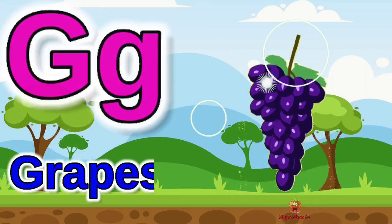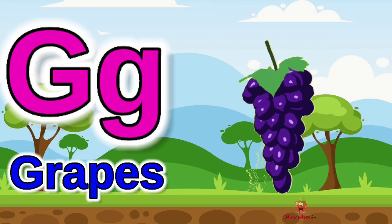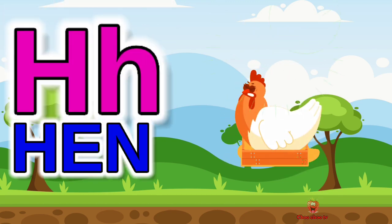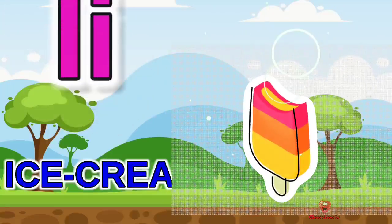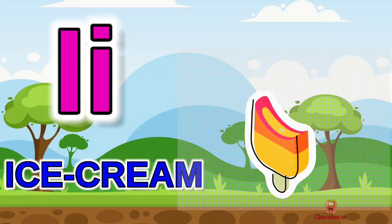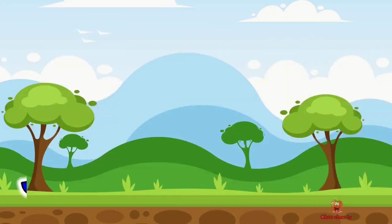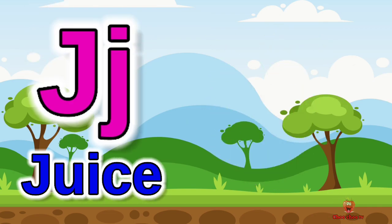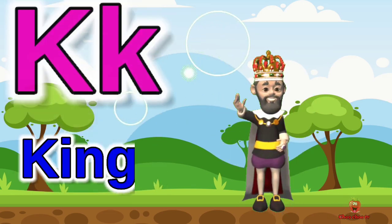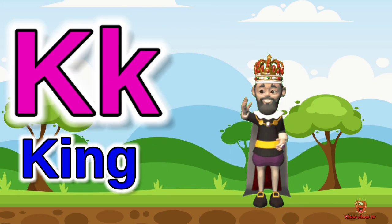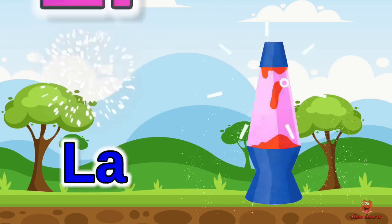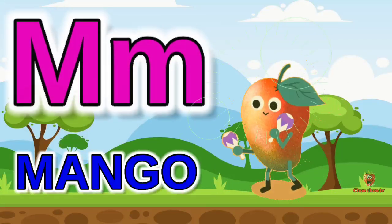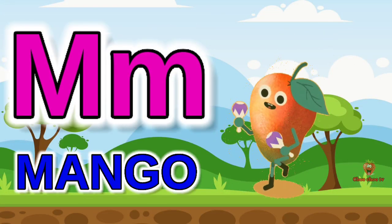G for grapes, H for hen, I for ice cream, J for juice, K for king, L for lamb.